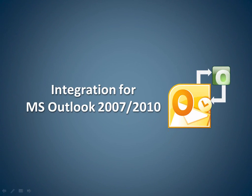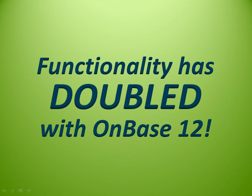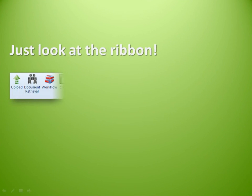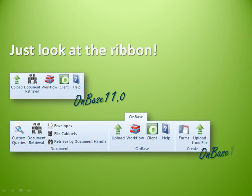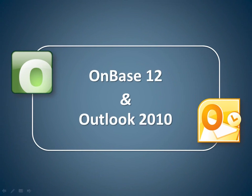A year ago, I recorded a presentation about how I use our integration to full-text search OnBase directly from Outlook, and I was able to find the right module reference guide to answer a question I had in my inbox. Well, that was OnBase 11, and a lot has changed since then. Now with OnBase 12, we can do even more from Outlook. In fact, the OnBase functionality available from Outlook has doubled with OnBase 12. Just look at the ribbon — and there's so much more, bringing the way we interact with OnBase from Outlook full circle.